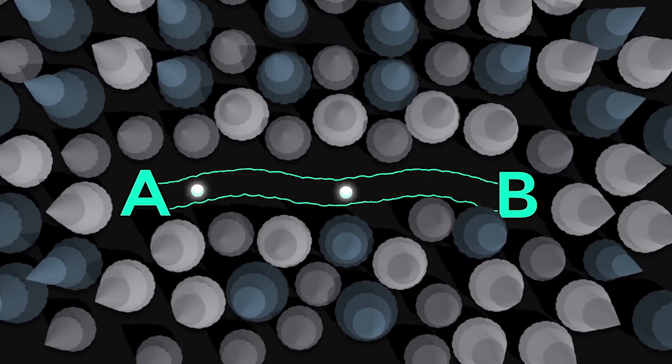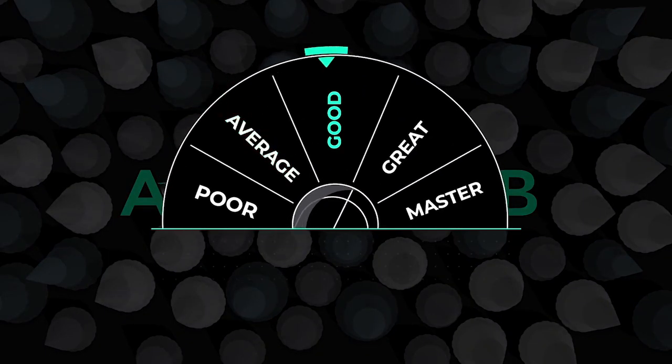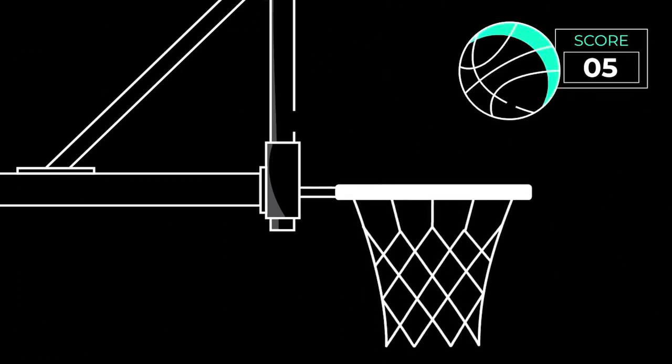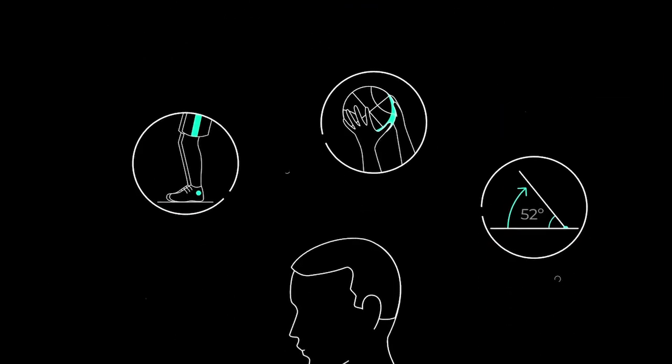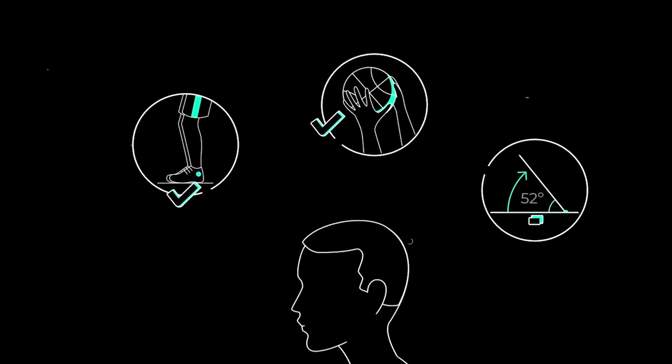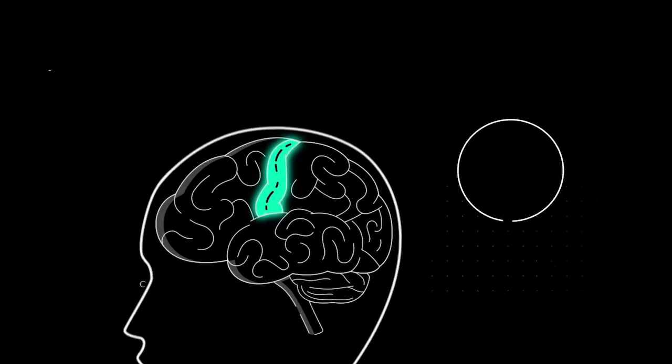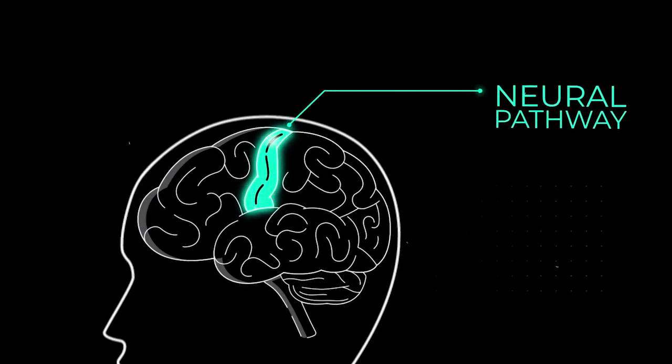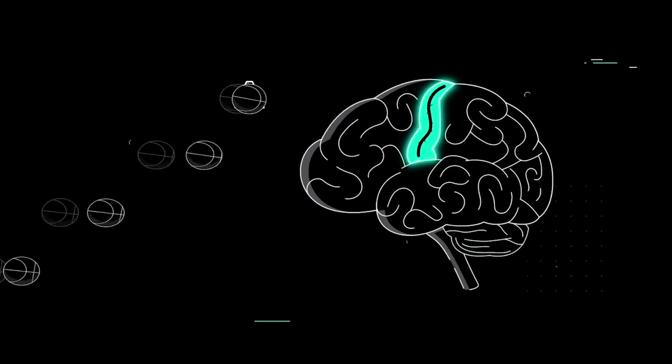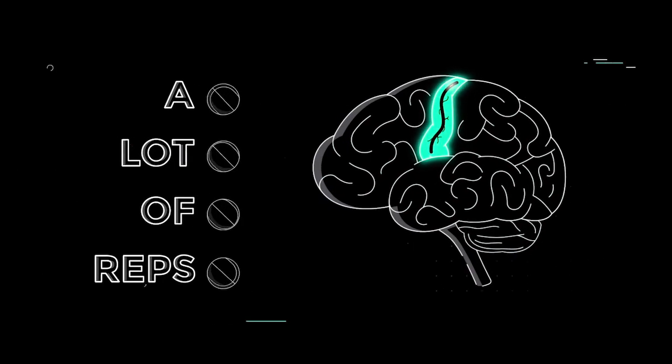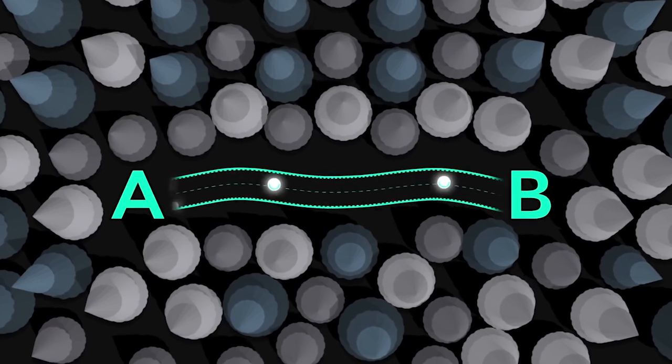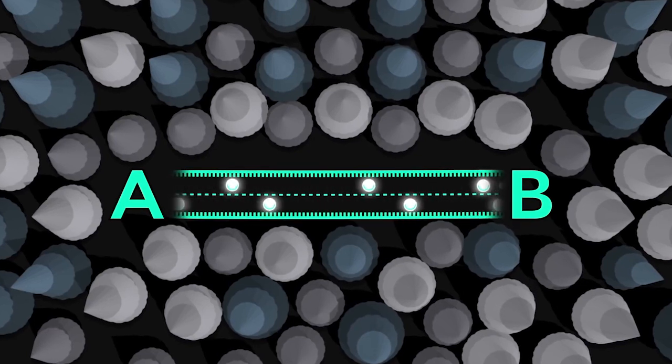You do not have to think about the mechanics as much because your pathways get stronger after each practice. With even more practice, the road turns into a paved highway connecting A and B, allowing information to be transmitted at a faster rate.